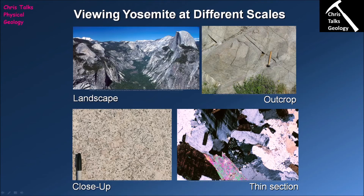Thin sections also reveal what's happened to the rock after it formed. This crystal of quartz isn't a consistent colour — it has variation, which is called undulose extinction, caused by the crystal being compressed and squished. This tells me that at some point this rock was exposed to compressive tectonic forces. As a geologist I then try to work out why and when that compressive event occurred. You can see that across varying scales there is a great deal of information a geologist can obtain from rocks.